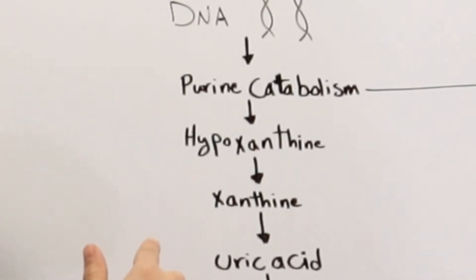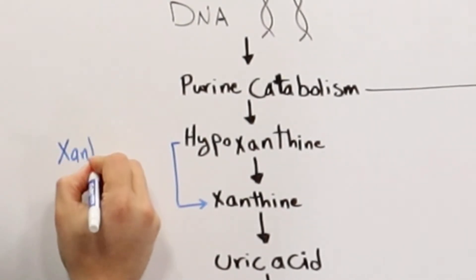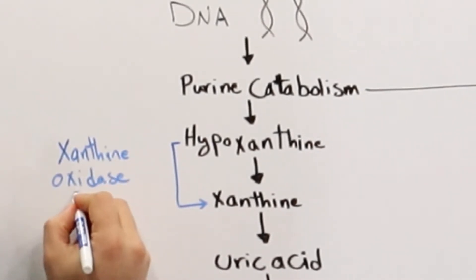Hypoxanthine basically gets converted into xanthine through the enzyme called, so from this step we go into this step, through xanthine oxidase enzyme.